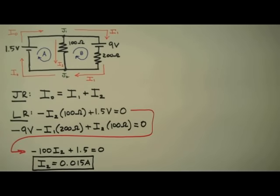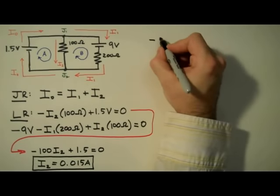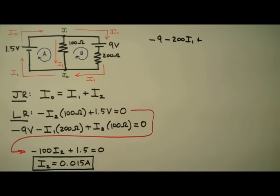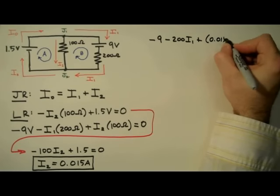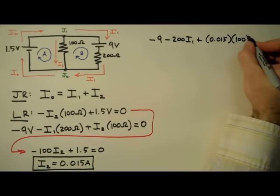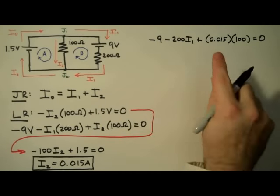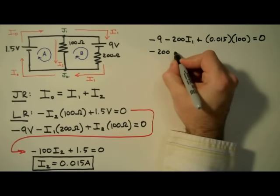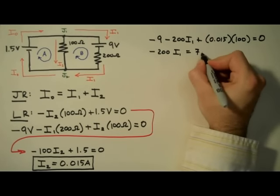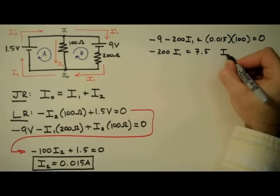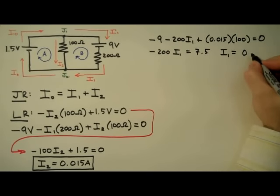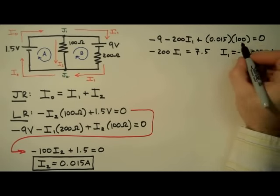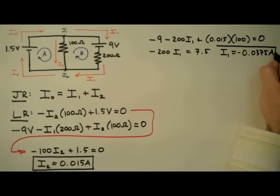Now I'm going to use this value to solve for I1 in the equation above — I'll plug it in and solve for I1. By the way, if you're comfortable with linear algebra, you may want to set these equations up in a matrix and solve for the variables that way; often that is a much simpler way of handling the algebra. In this case I'm just going to plug and chug. This product is equal to 1.5 volts. Moving it to the other side: negative 200 I1 equals positive 7.5. So I1 equals negative 0.0375 amps, or negative 37.5 milliamps. Don't forget this negative sign — that's important.